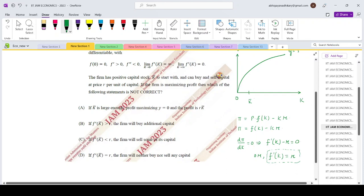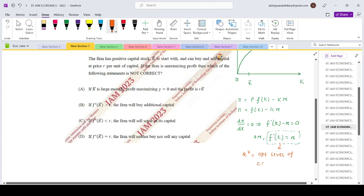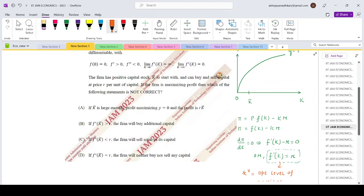If you recall, the idea of finding out the optimal is that this is the condition which will give us the optimal level of capital. So when the firm reaches this optimal level of capital it will be able to maximize its profits.